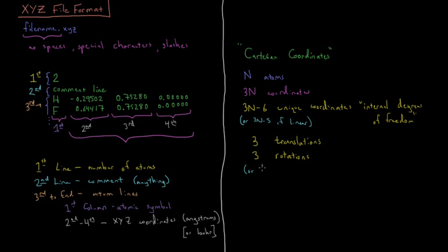And for the rotations, it's two if linear. Because obviously in this case, we can't rotate around the vector between H and F because they will both stay on that vector. If we put them both on the z axis, we couldn't rotate around the z axis because they wouldn't move anywhere during rotation. So those are the basics of the XYZ file format. Thank you.